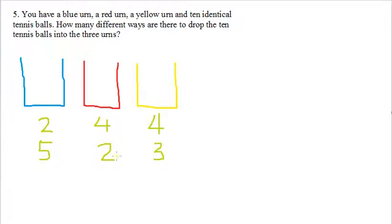Just to clarify, if it's 5, 2, 3 and 5, 3, 2, those would be two different possibilities, because these two urns are different colors. So we can clearly tell if the red urn has more than the yellow, or vice versa. And as one final possibility, we could have 0 balls in the blue urn, 6 balls, and 4 balls. So just keep that in mind.